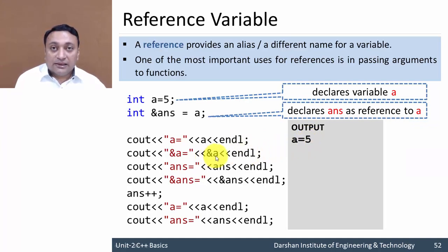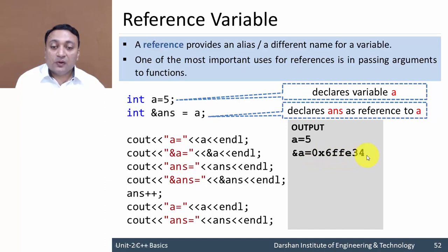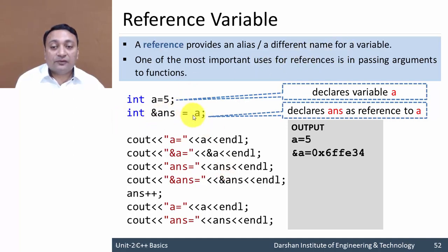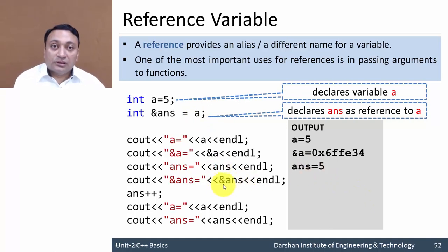If we display the address of 'a' using the ampersand operator, it will show some hexadecimal value like 0x6ffe34. If we display 'answer', it will print 5 because 'answer' is ultimately a different name for variable 'a'. Printing either 'a' or 'answer' gives the same output of 5.